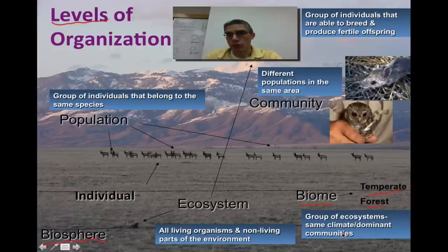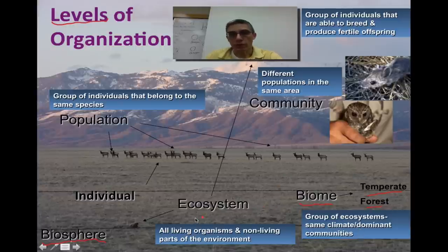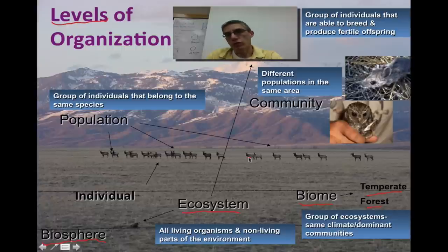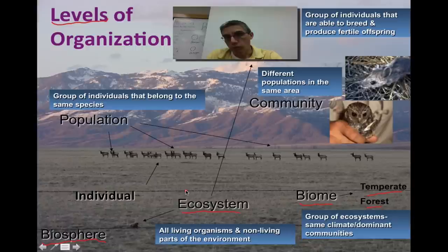A biome is simply a group of ecosystems that have the same climate or dominant communities of living organisms within that area. Underneath biome, you find something called an ecosystem — all the living organisms and the non-living parts of that environment. For example, the ecosystem not only includes the caribou or elk in this picture, or mice and owls, but also the rocks, the water, the air, and the precipitation that might fall in that area. All of those are considered parts of the ecosystem — both living and non-living.